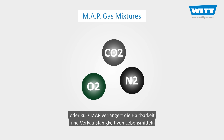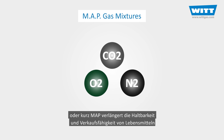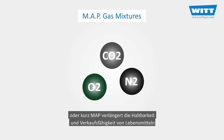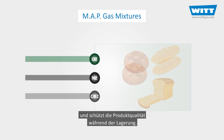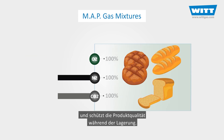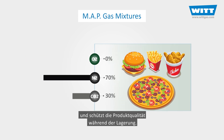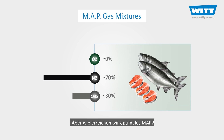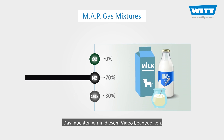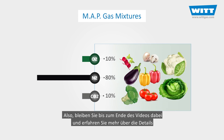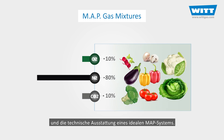Modified Atmosphere Packaging, or MAP for short, increases a food's shelf life and saleability, as well as maintaining the food quality during its storage period. But how do we achieve optimal MAP? This is what we aim to answer in this video, so please stay with us to the end to find out more about the details and equipment for an ideal MAP system.